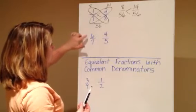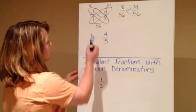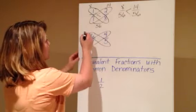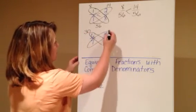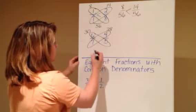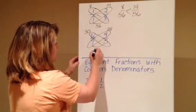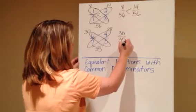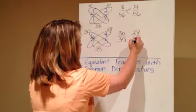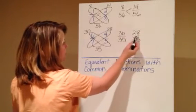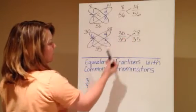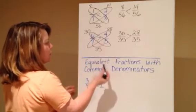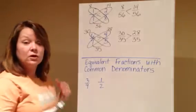Okay, we've got one more using this method: six-sevenths and four-fifths. We're going to again put our loop around diagonally. Six times five gives me thirty, and four times seven gives me twenty-eight. I multiply five times seven, which gives me thirty-five. And now I have thirty thirty-fifths compared to twenty-eight thirty-fifths. Thirty is larger than twenty-eight, so six-sevenths is greater than four-fifths. That's our butterfly method.